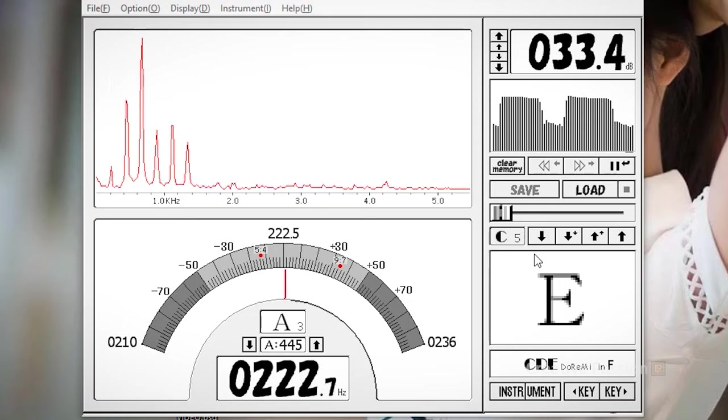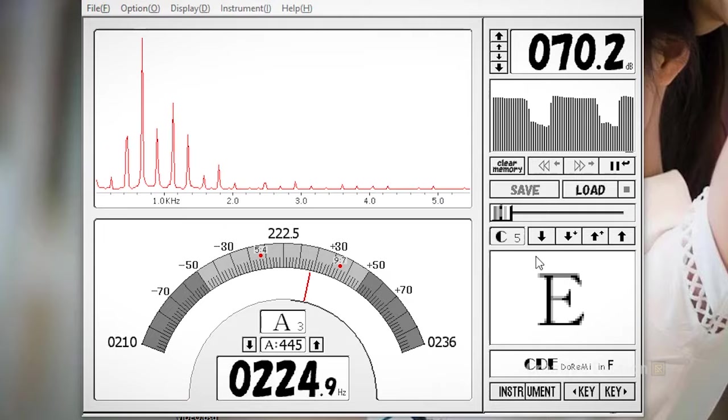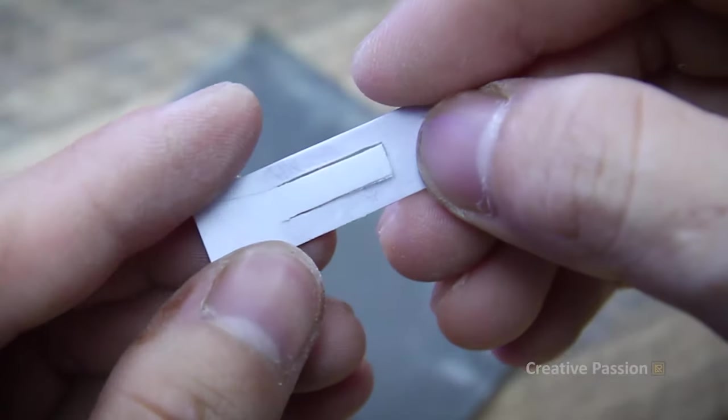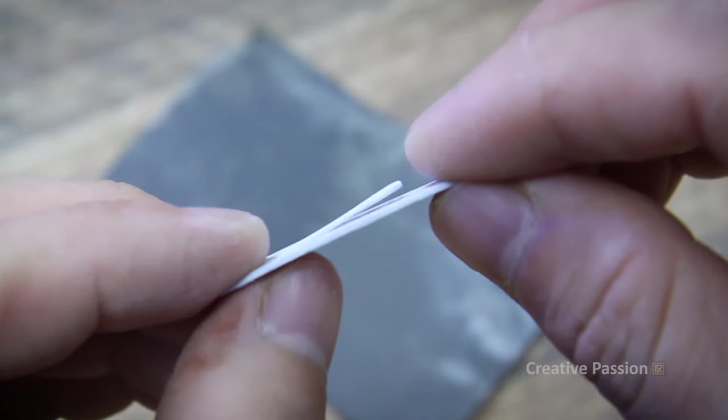When the reed reaches the appropriate thickness, we will test blow it. Okay, if the sound is close to Si note, it's almost good. We can let it be a bit lower, that's also fine.